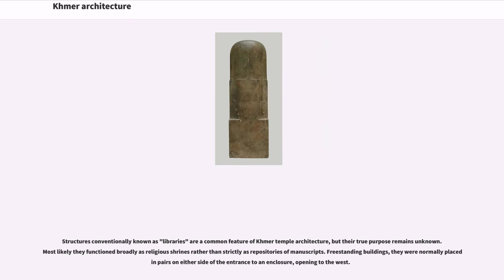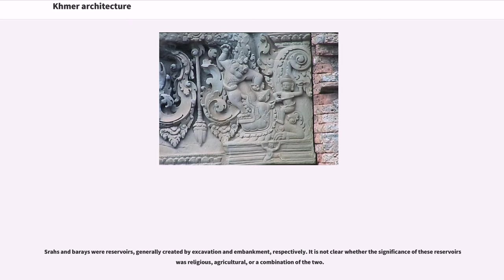Structures conventionally known as libraries are a common feature of Khmer temple architecture, but their true purpose remains unknown. Most likely they functioned broadly as religious shrines rather than strictly as repositories of manuscripts. Freestanding buildings, they were normally placed in pairs on either side of the entrance to an enclosure, opening to the west. Sras and Barays were reservoirs, generally created by excavation and embankment respectively. It is not clear whether the significance of these reservoirs was religious, agricultural, or a combination of the two.